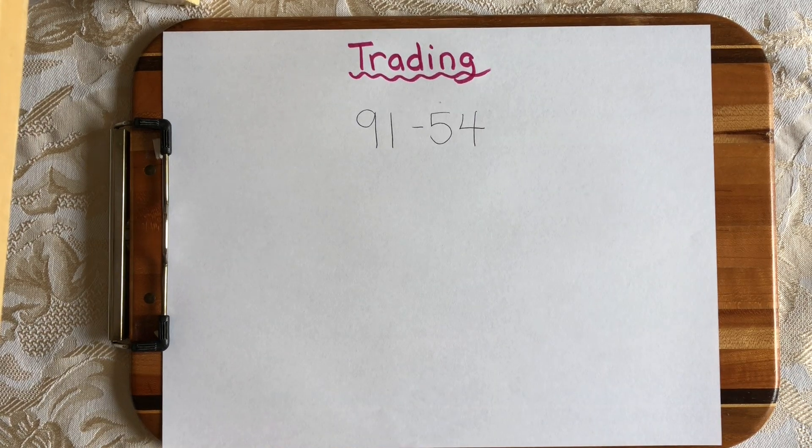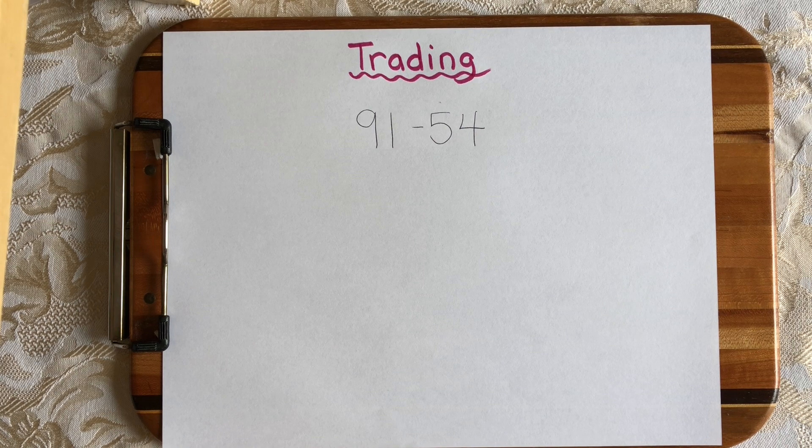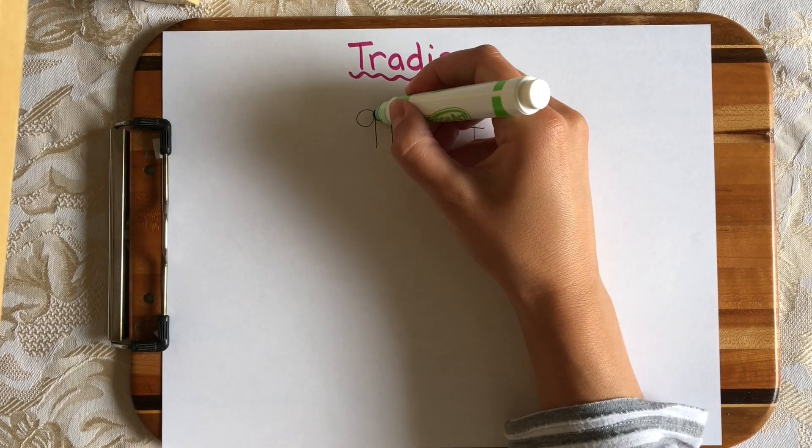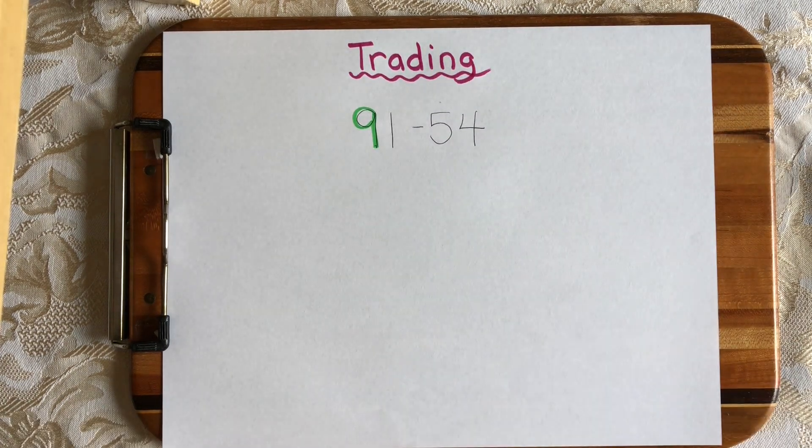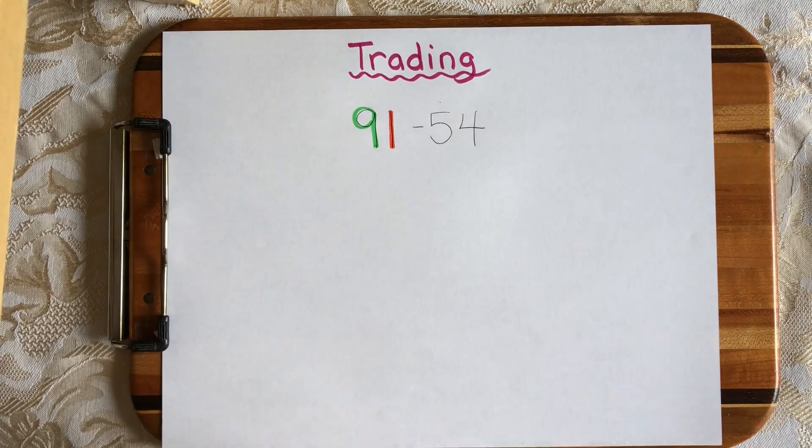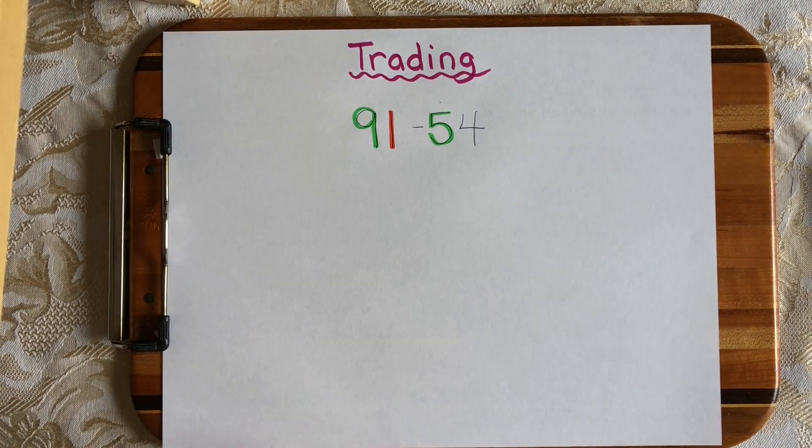Let's try the trading strategy with 91 minus 54. So I'm just going to start off by highlighting the 10s digits and the 1s digits with green and red. So in 91, there are 9 tens and 1 one. In 54, there are 5 tens and 4 ones.